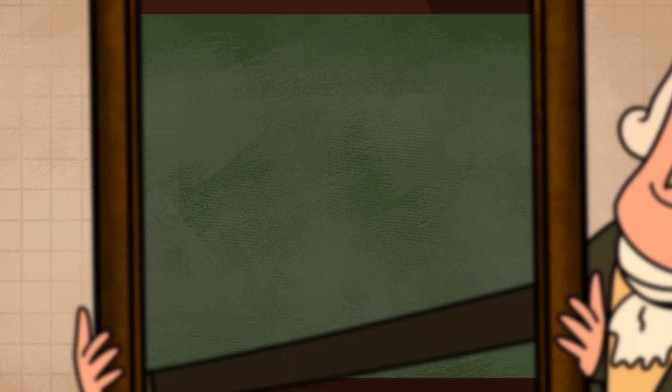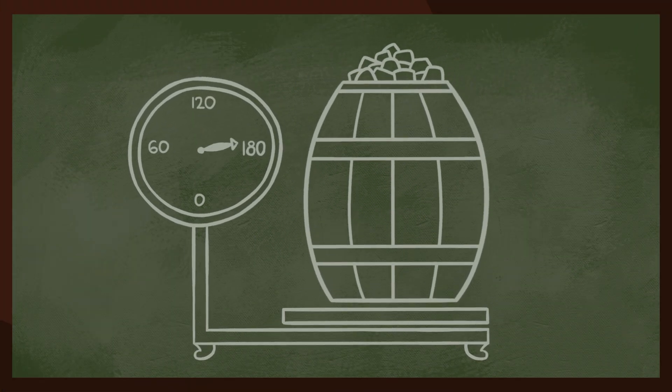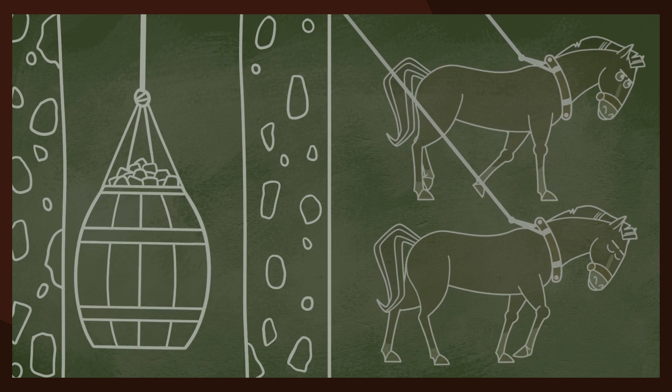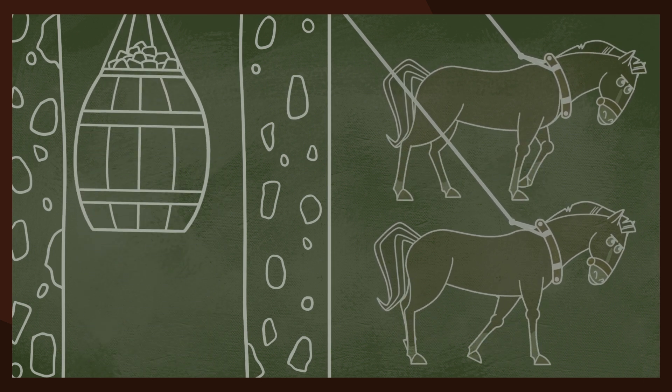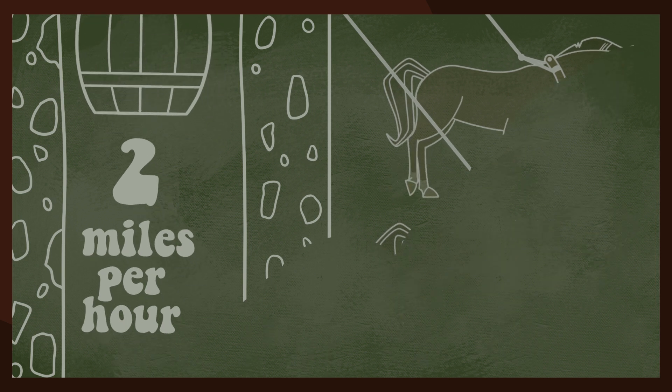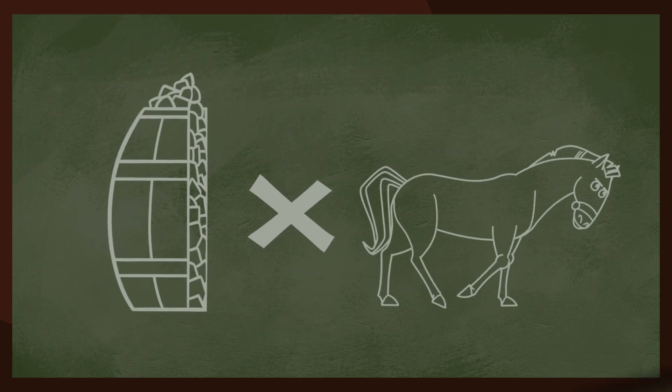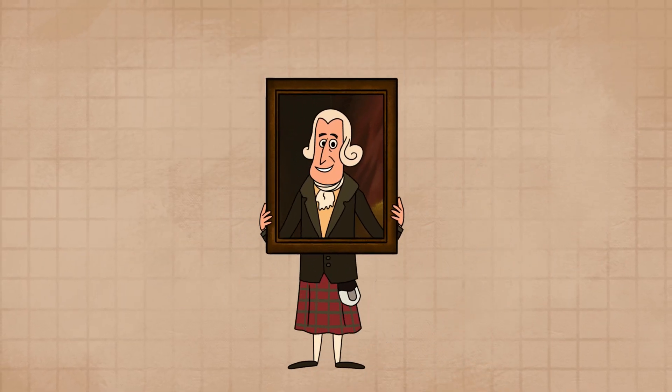According to Watt, the average barrel weighed around 180 kilograms, and two horses could pull it up the shaft of the mine at a speed of 2 miles per hour. He then multiplied the mass of the barrel by the speed and rounded up the result. From this, he got the strength of one horse.